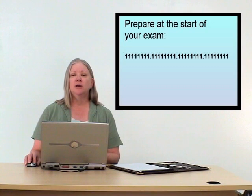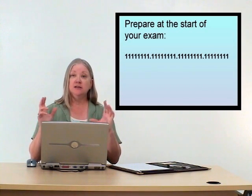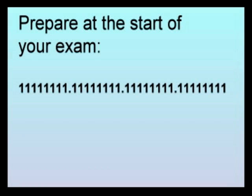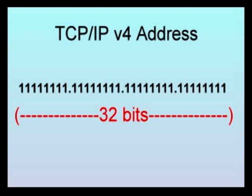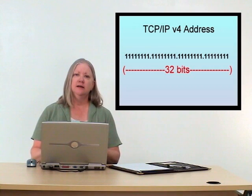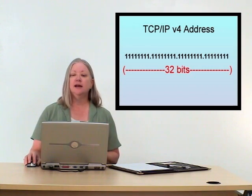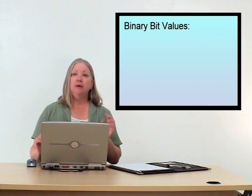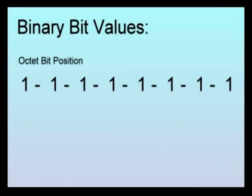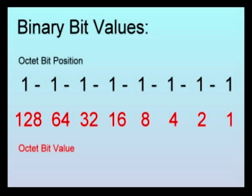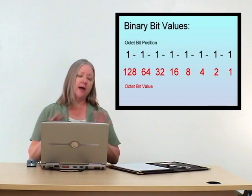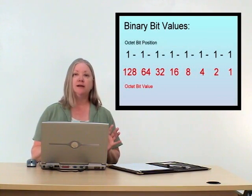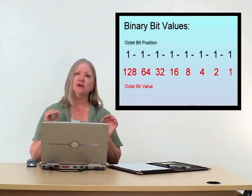One of the things that I like to do when I'm starting the exam is to take that sheet that I get and to write along one side of it the 32 bits of a TCP/IP version 4 address. This gives me a work area to use as I'm answering my questions. Another thing I like to add are the bit values for at least one of the octets. Your highest order bit has a value of 128, then 64, 32, 16, 8, 4, 2, and 1. If you write these down, you won't have to think about it as you're answering questions — you'll have it there to refer to.